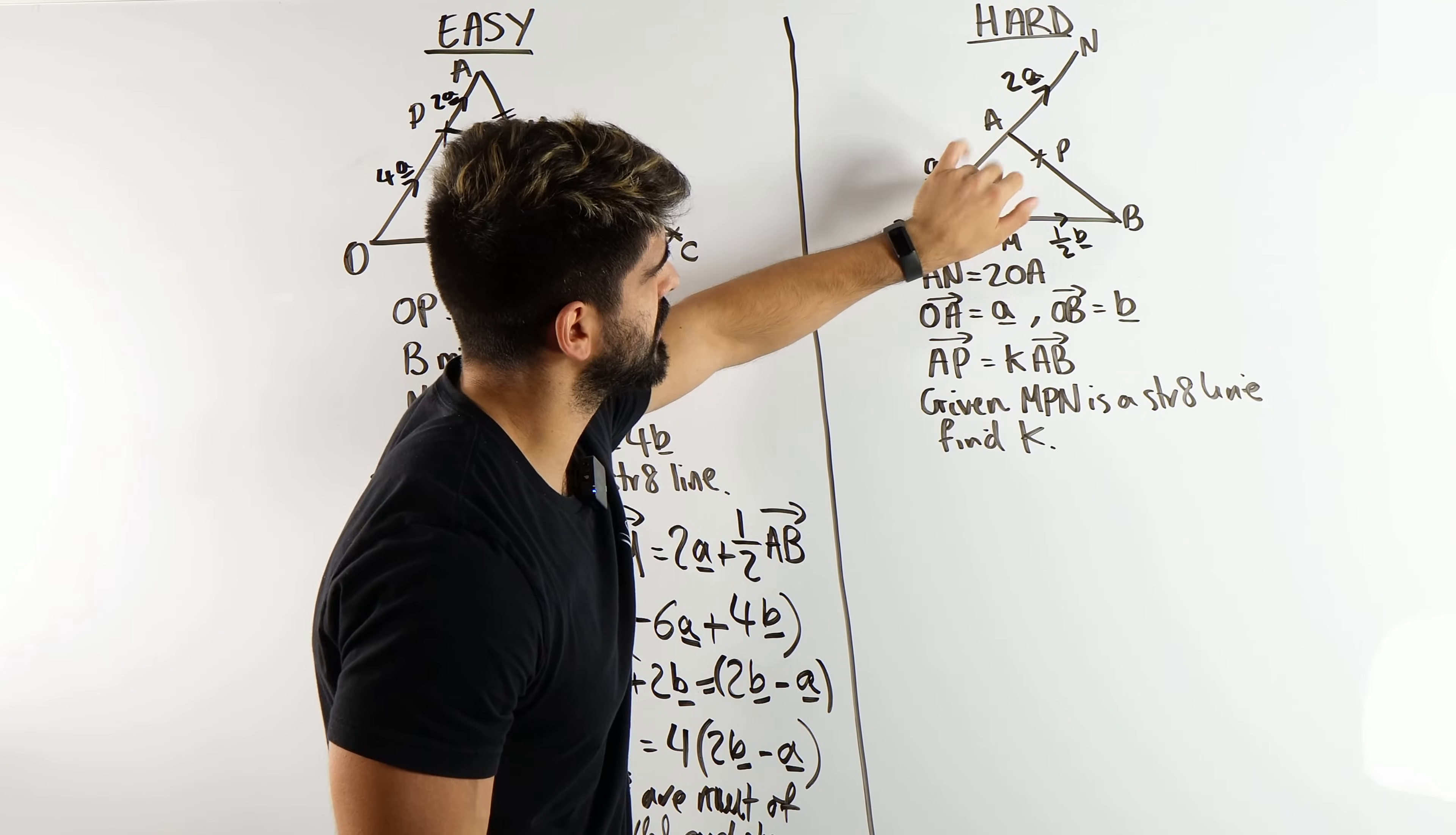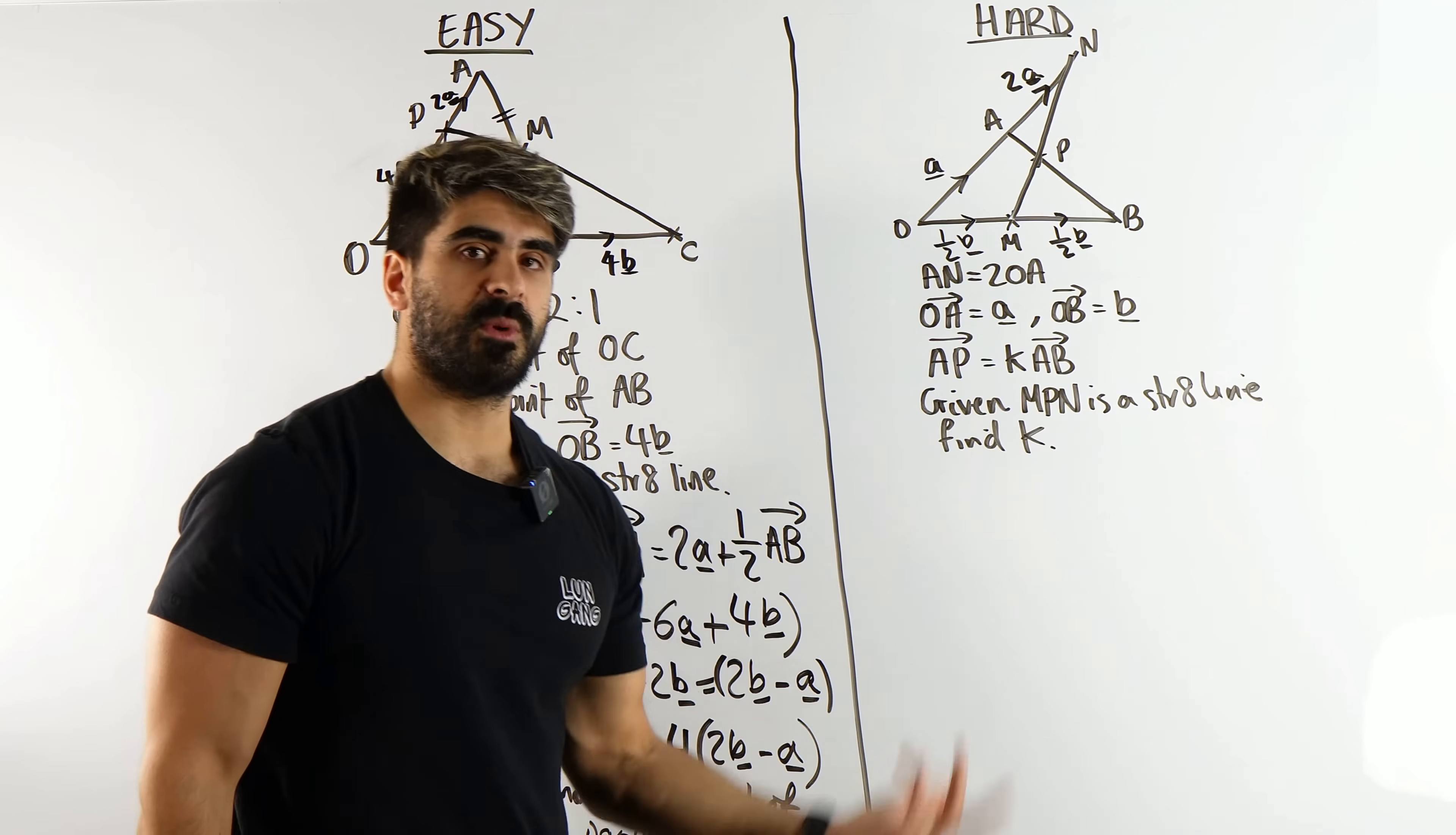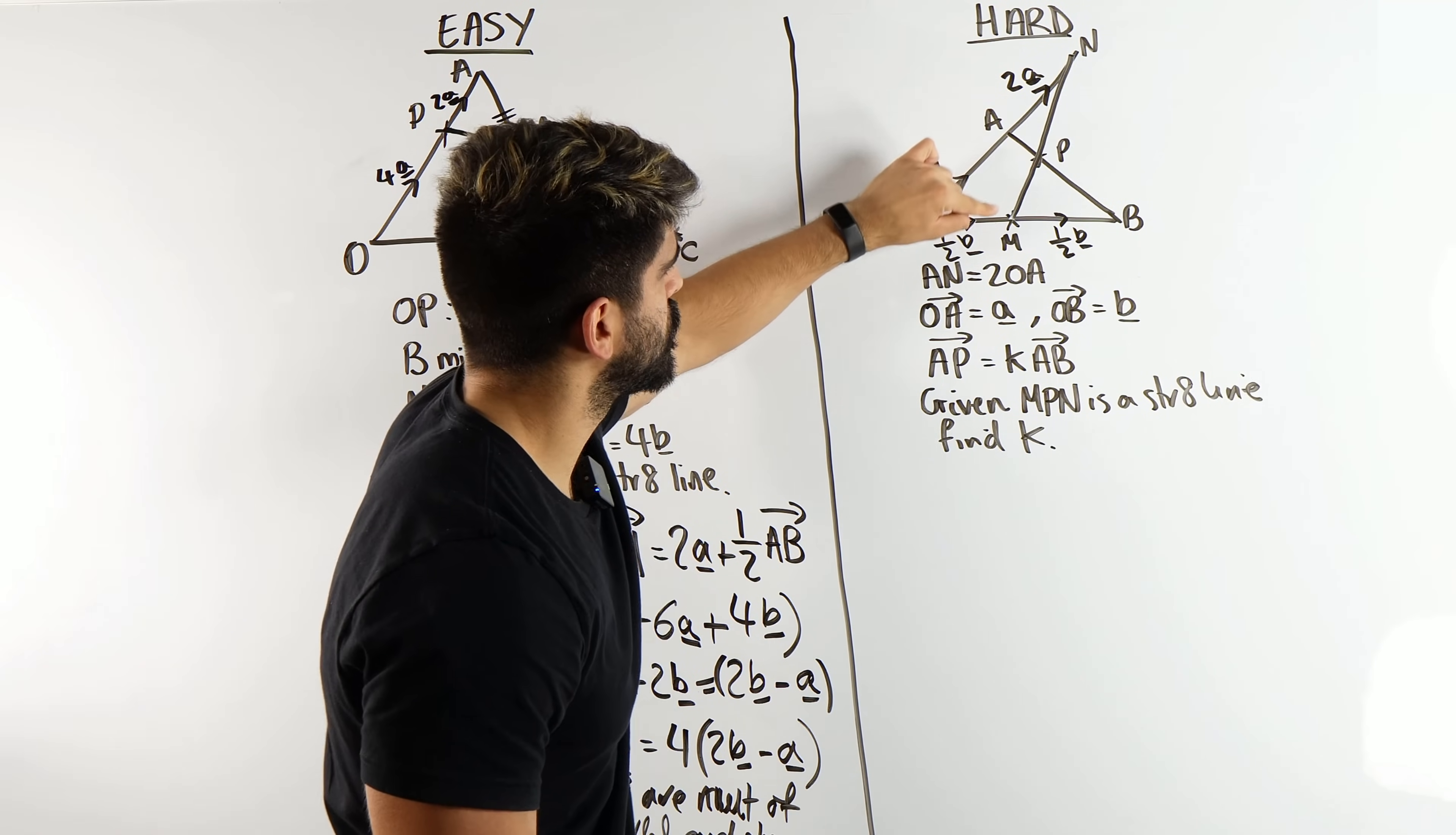AP is k lots of AB. So what does that mean? You can see that AP is smaller than AB, right? So this must be a fraction between 0 and 1. Just as an example, it could be a third. We're saying AP is a third of AB. So k is a fraction between 0 and 1. Now in the question, they've said, given that MPN is a straight line, find the value of k. What does it mean that MPN is a straight line? They're not saying prove like we did here. Here they're saying it's a straight line. Meaning this vector MP must be parallel to MN. Remember what we said, always pick the end points. It's going to make your life easier.